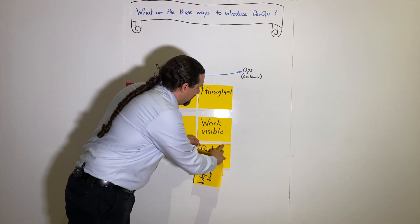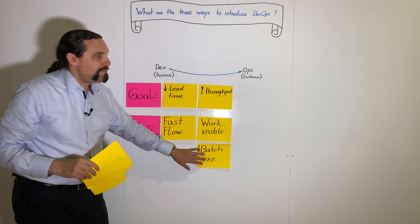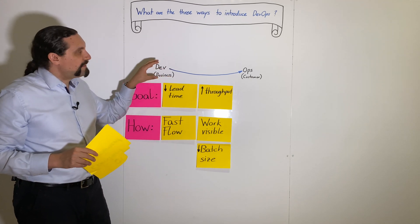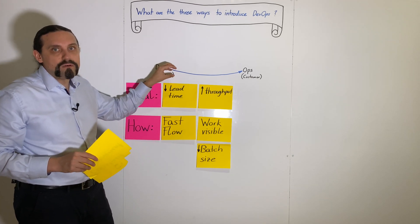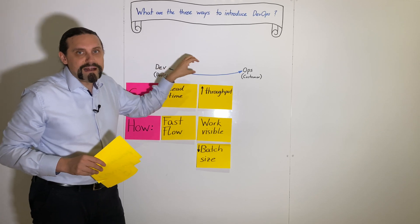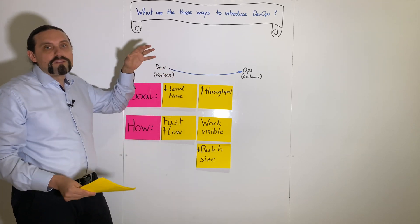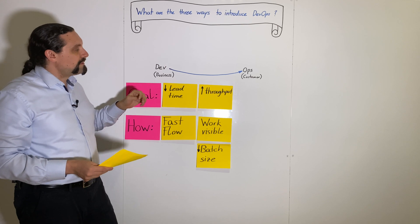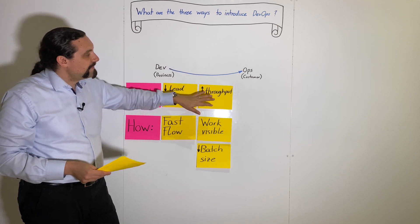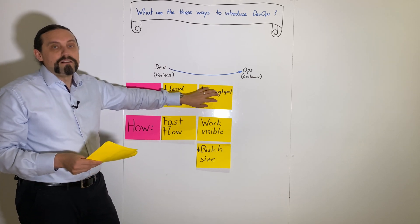And secondly, we are going to reduce the batch size. We want to have small items, small features, small value items which flow through the system, not the big items or big chunks, because we want to optimize for throughput.